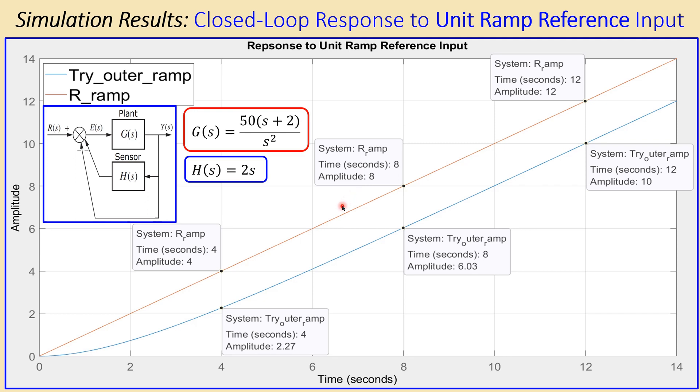But if you look at your response for your system, that is actually at 4 seconds is 2.27. So it is now larger than 2 because this difference is larger than 2.